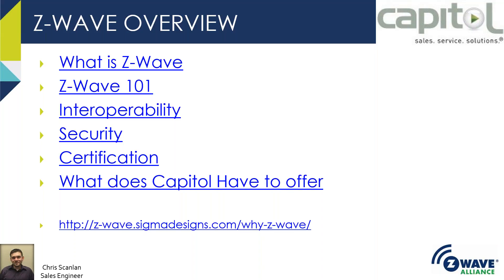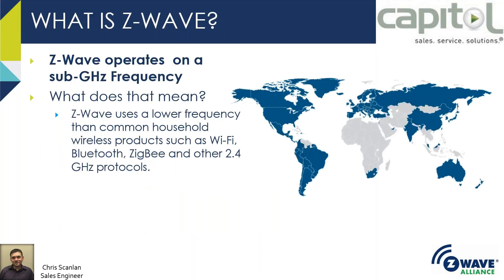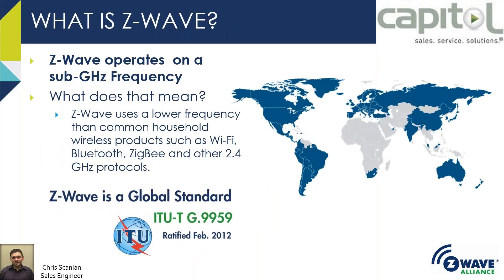Let's not waste any time. Let's get into what is Z-Wave. First of all, Z-Wave operates on a sub-gigahertz frequency. Most wireless frequencies being used are in the full gigahertz range — 2.4 GHz, 5 GHz, 6 GHz — very congested ranges. Z-Wave broadcasts on the 900 MHz range, which is much more open.